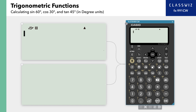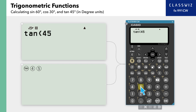Now, let's use the same steps to calculate tangent 45 degrees. Enter tangent, 4, 5, and closing parenthesis. Then press Execute to find a result of 1.